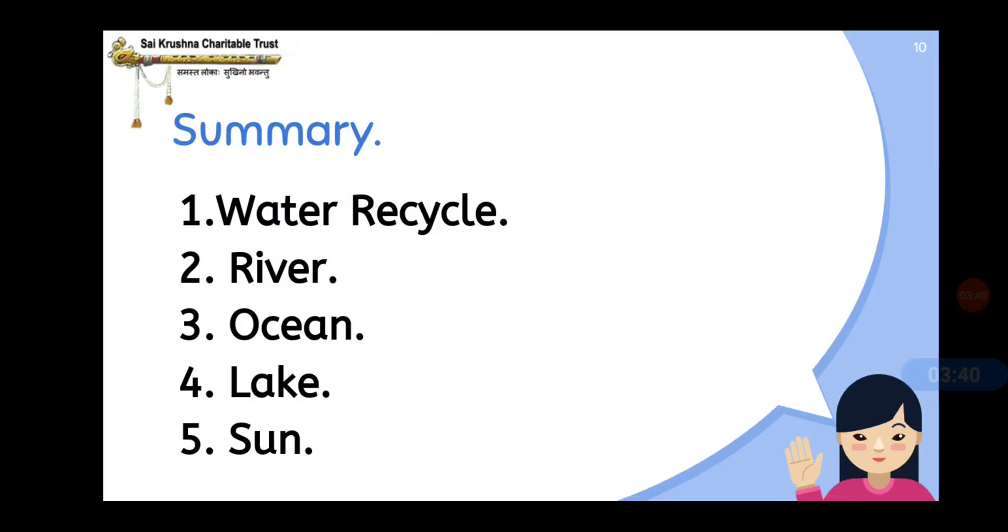These tiny droplets of water join together to form clouds. After that, on further cooling, the drops get bigger and fall down on earth as rain. We get rain like that.